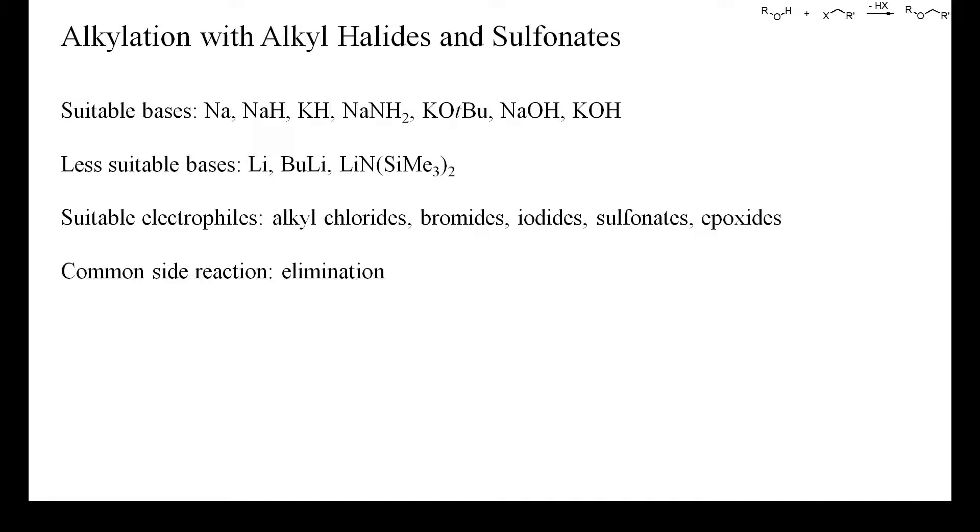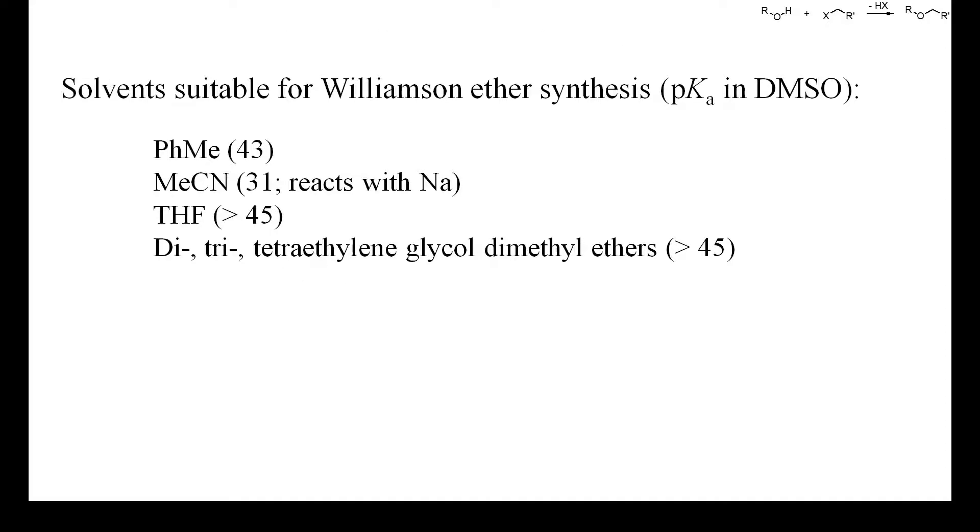The most common side reaction of the Williamson ether synthesis is the formation of alkenes by beta elimination. The high basicity and nucleophilicity of alkoxides combined with their low solubility can complicate the choice of solvent.